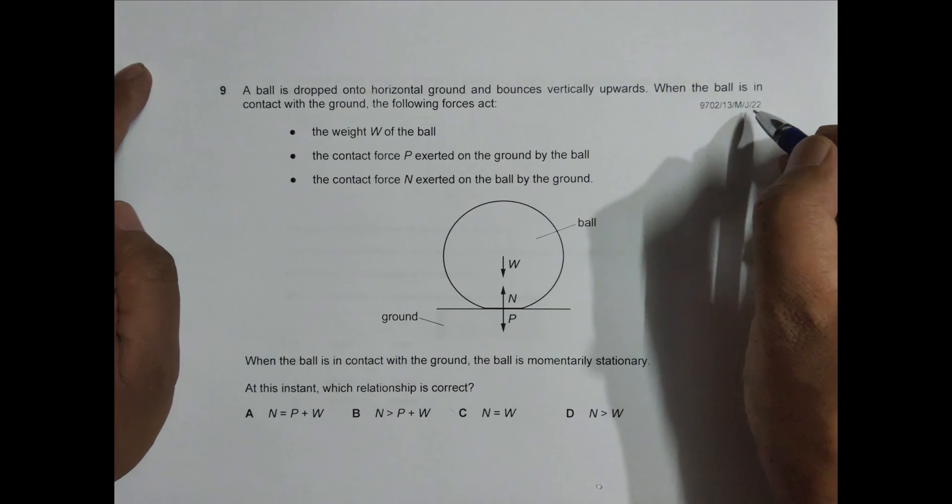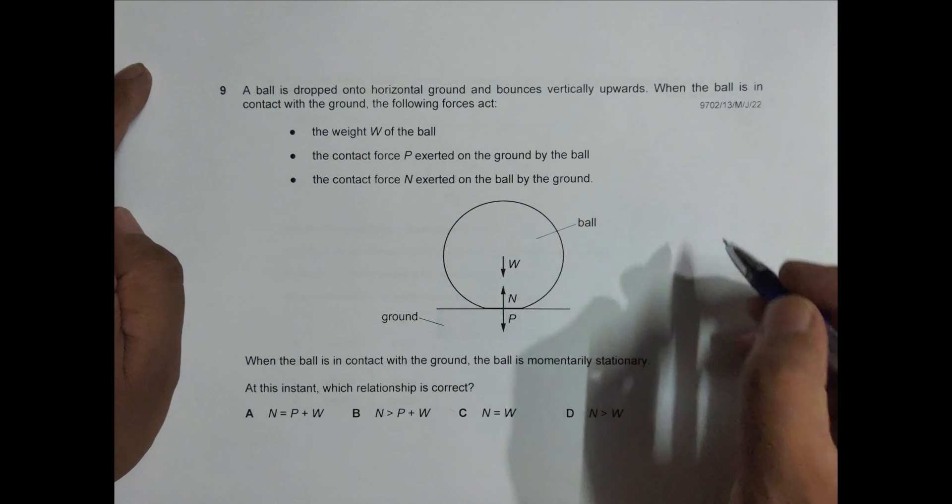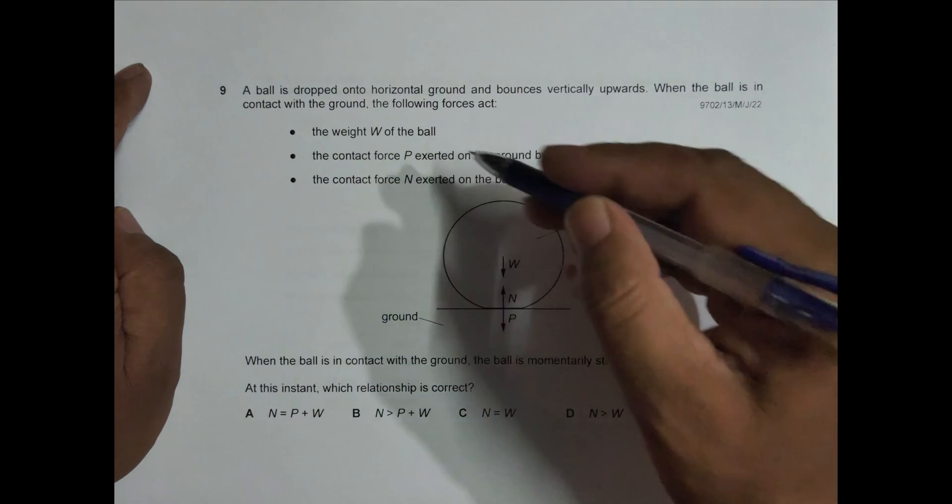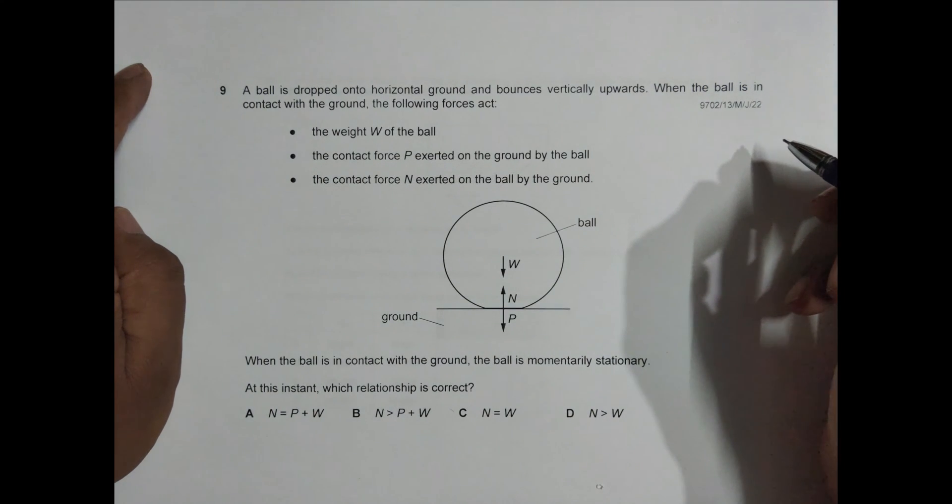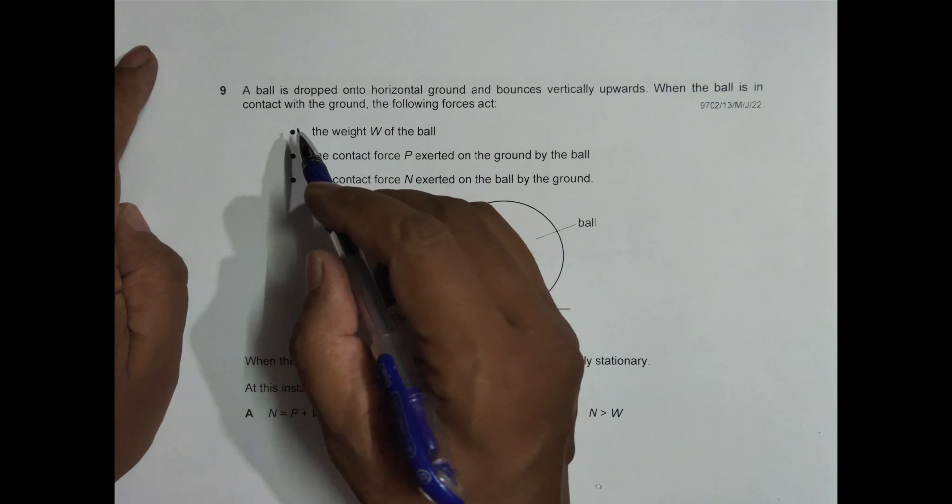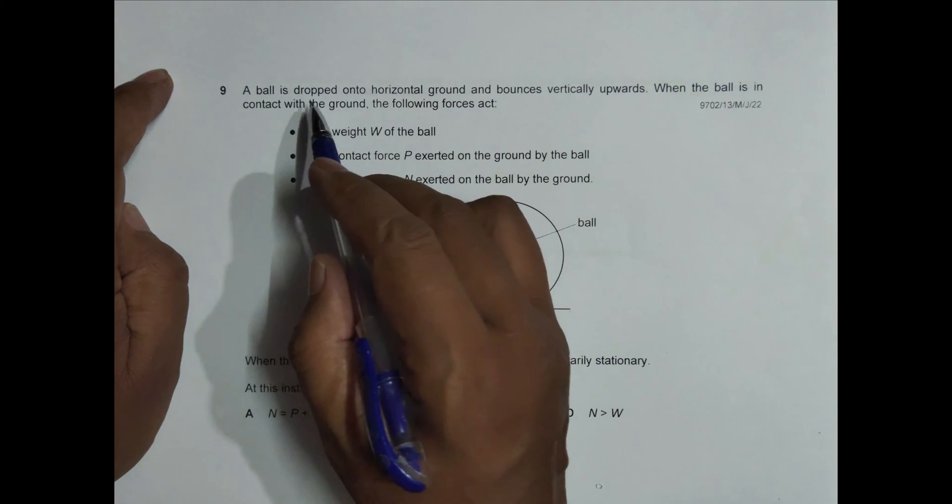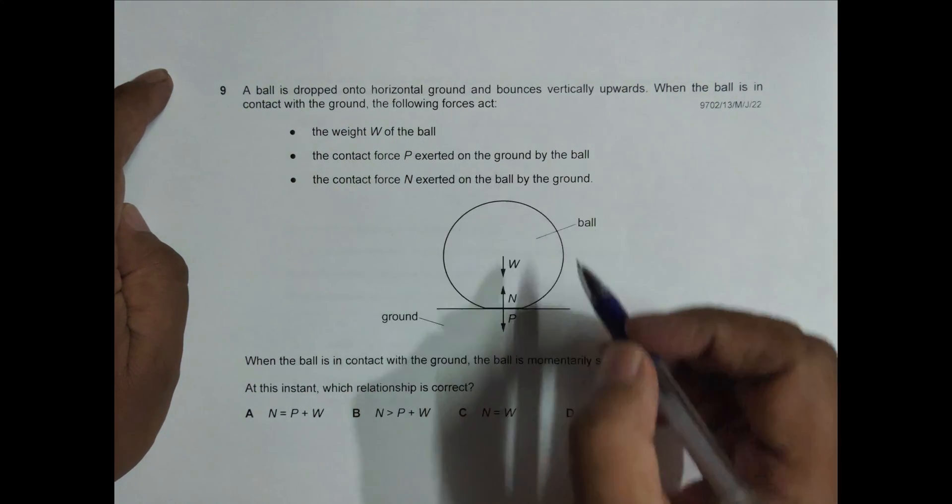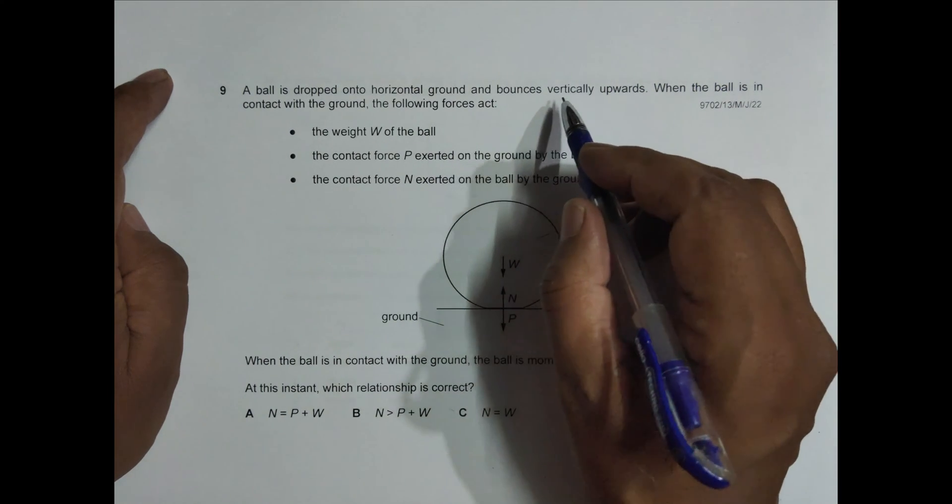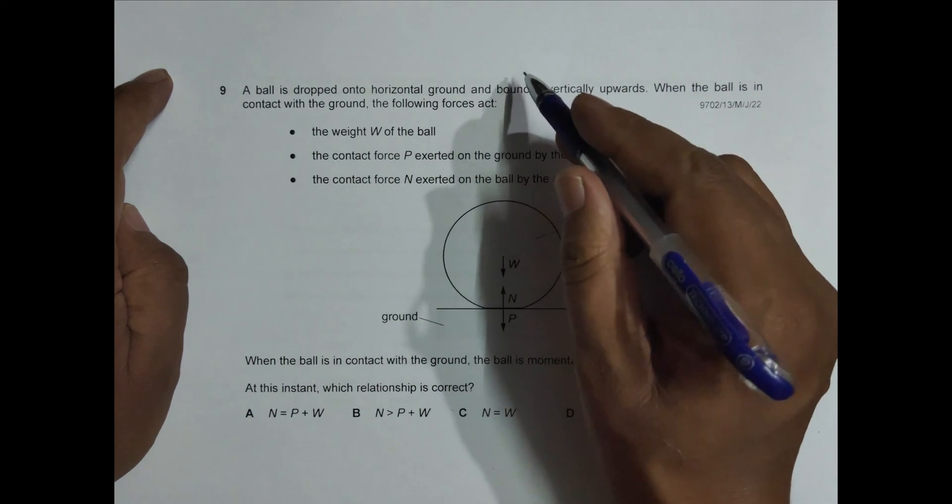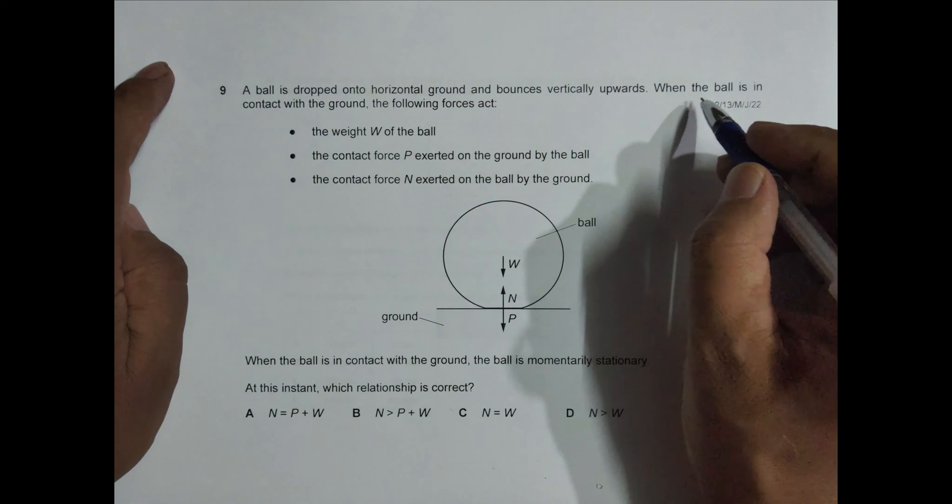Hello folks, this is 2022 May-June Paper 1-3, question number 9. The diagram shows a question about the chapter of forces. It says that a ball is dropped onto horizontal ground and bounces vertically upwards. It drops and bounces when the ball is in contact with the ground.